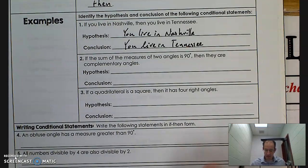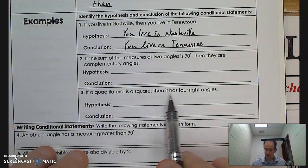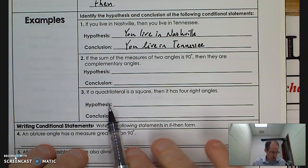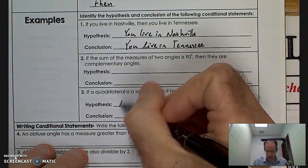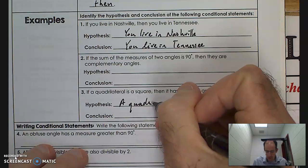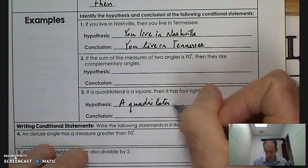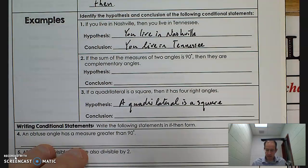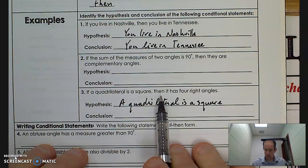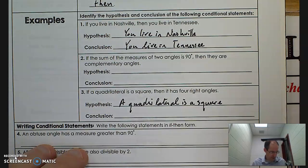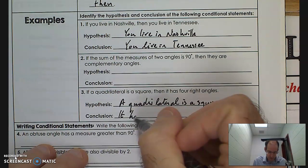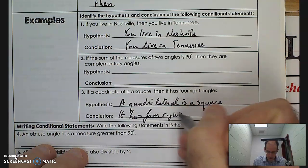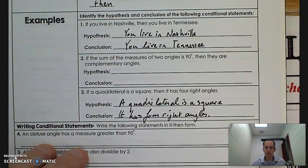Question three says: 'If a quadrilateral is a square, then it has four right angles.' So what follows the 'if' is the hypothesis: 'a quadrilateral is a square.' And the conclusion — that which follows the 'then' — is 'it has four right angles.'